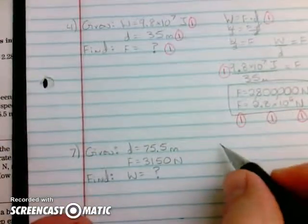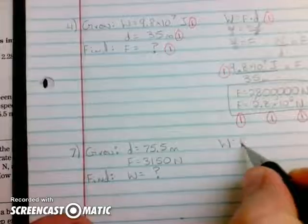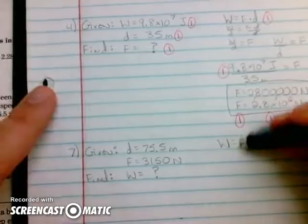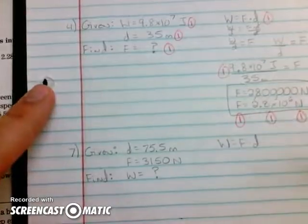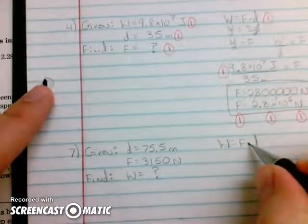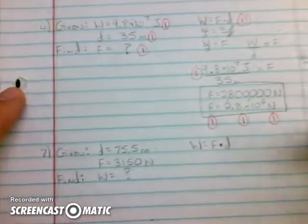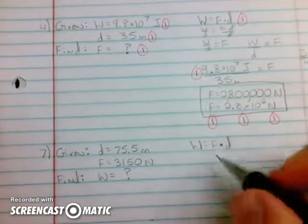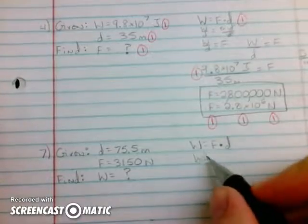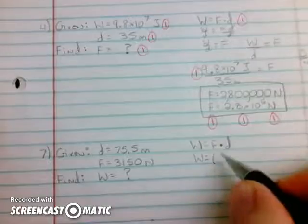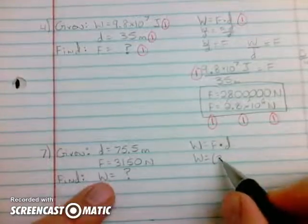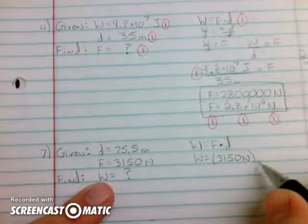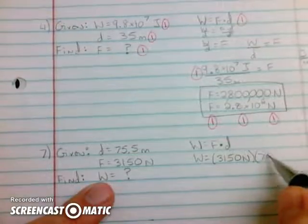This is actually pretty simple. We're gonna use the equation work equals force times distance. I usually like to use a dot instead of an X because to me an X looks like the algebraic X variable. Work equals force times distance. In this case we are trying to find work, so all we have to do is plug our values in. We don't need to rearrange this equation. It's already set up the way we need it. So 3,150 Newtons times 75.5 meters.